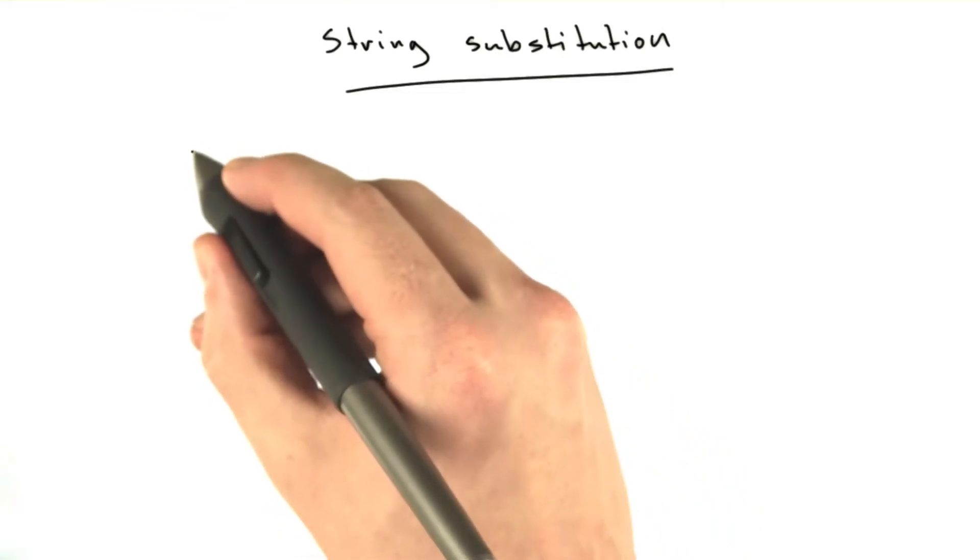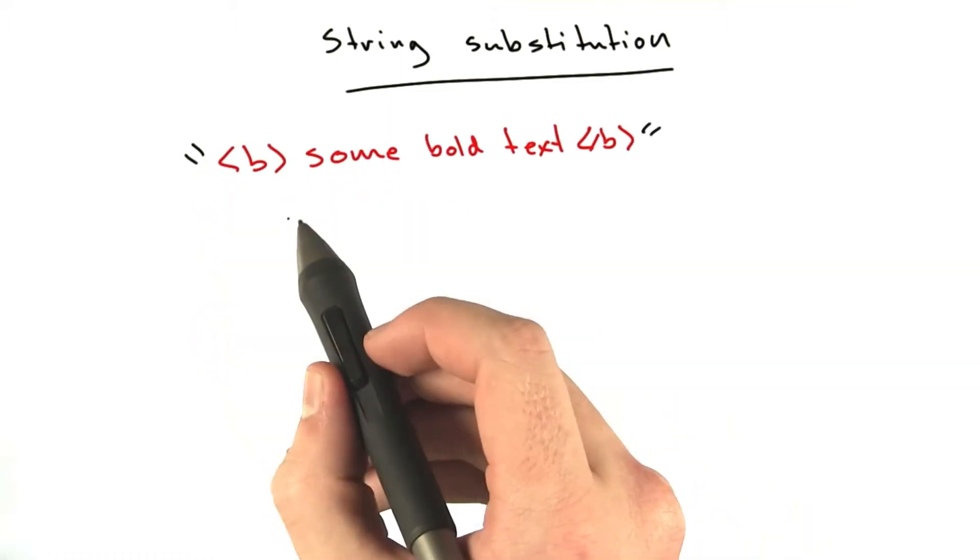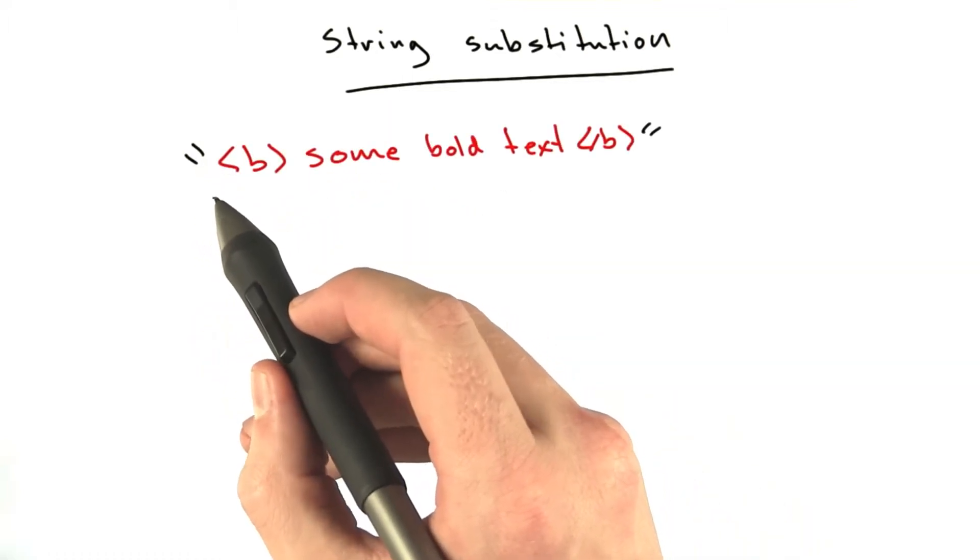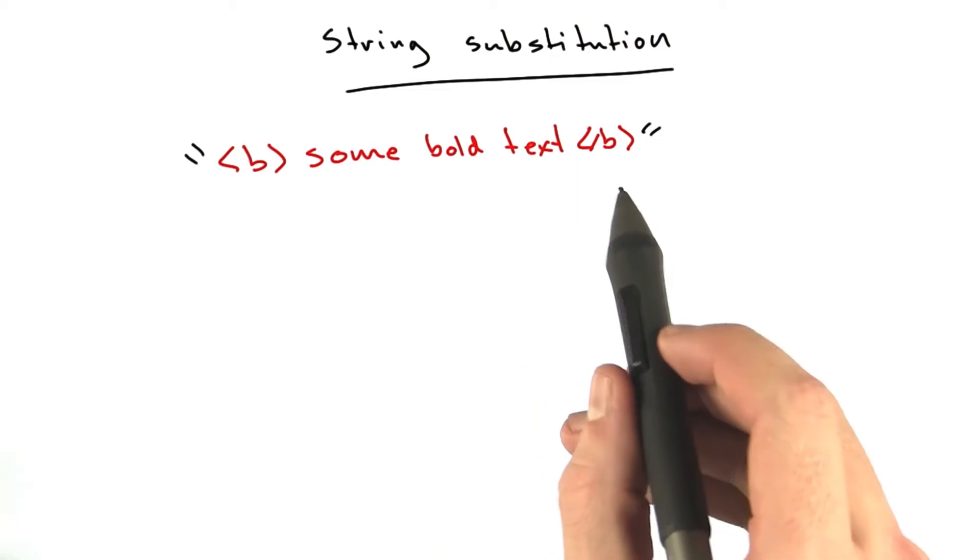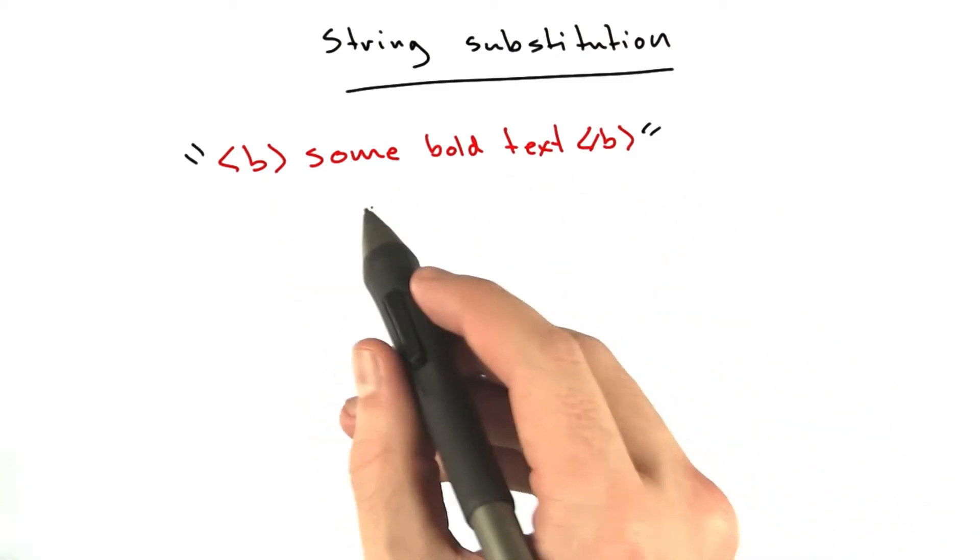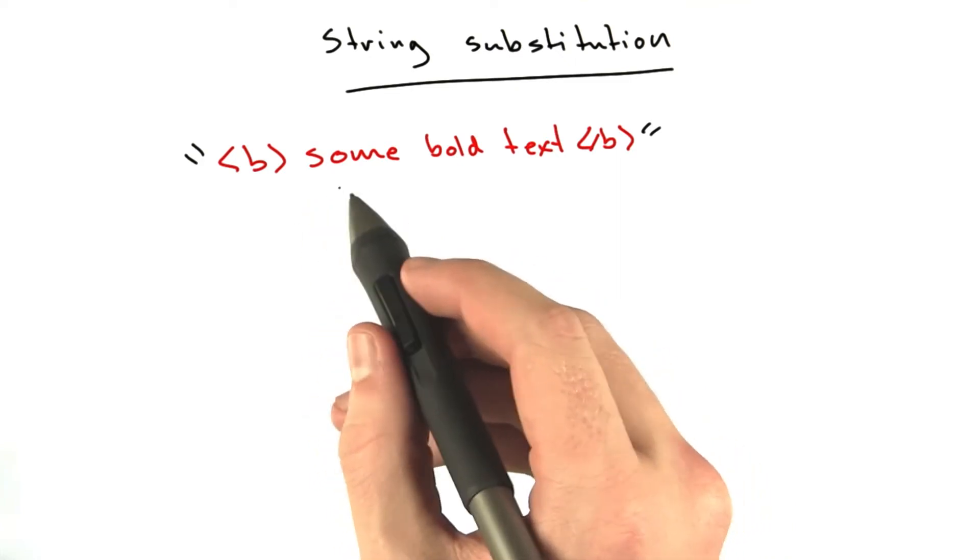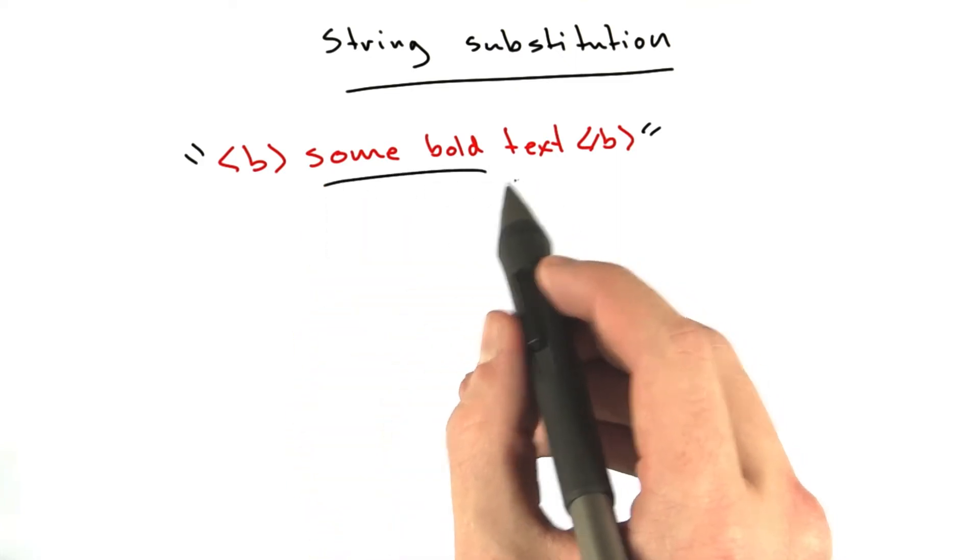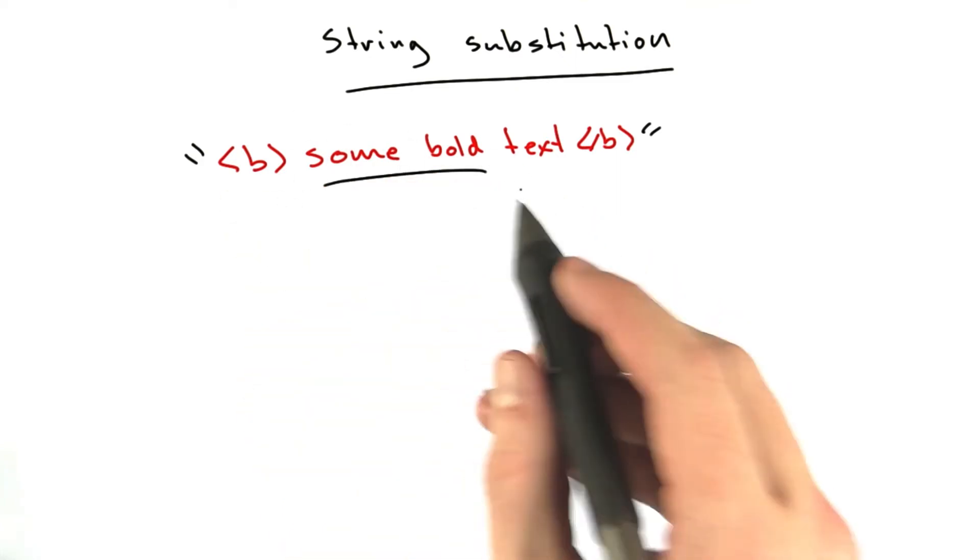If we have a string in Python that's represented like this, this is a string that we will probably be returning something like this in our web app, a little bit of HTML with some contents. If we want to return a lot of different types of bold contents with different text, it's a pain because we have to make this whole string every time.